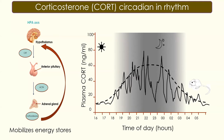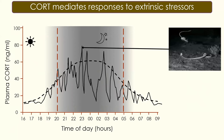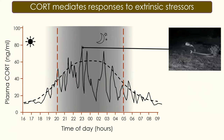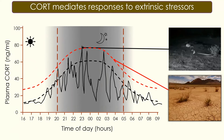Cort can also mediate responses to extrinsic stressors — which is why it's called the stress hormone. During a given night, when cort is being released normally, an animal might experience an acute stressor and higher releases of corticosterone, for example when it narrowly avoids being eaten by a predator. Corticosterone can also help mediate responses to chronic stressors such as drought and climate change, where cort is released in higher amounts across time to help the animal acclimate to those external stressors.